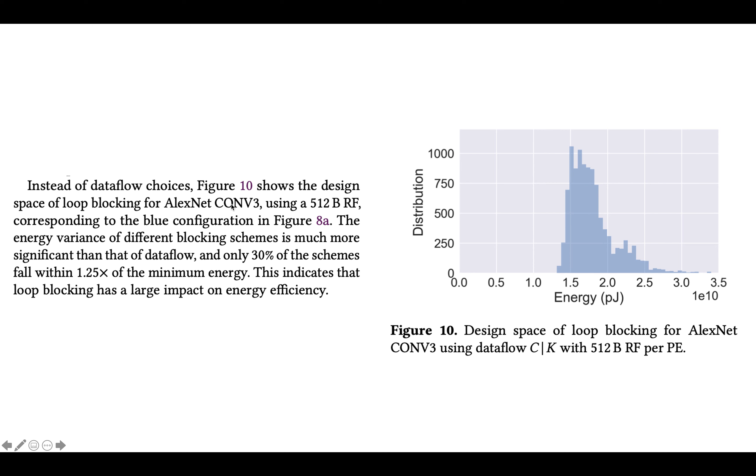Because they mention that instead of data flow choices, figure 10 shows the design space of loop blocking for AlexNet conv3 using a 512-byte register file corresponding to the blue configuration in figure 8a. So we just looked at that figure, it's the top left. The energy variance of different blocking schemes is much more significant than that of data flow and only 30% of the schemes fall within 1.25x of the minimum energy.